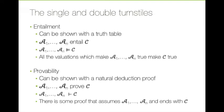Entailment was the notion we used to define validity when we were studying truth tables. If A1 through AN entailed C, then if A1 to AN were the premises and C was the conclusion, we would have a valid argument. We introduce a meta-linguistic shorthand for entails — the double turnstile symbol. This is a meta-linguistic variable, just like our curly A's and curly C's, which stand for any sentence of truth-functional logic. We can write A1 to AN double turnstile C when all the valuations that make A1 to AN true also make C true.